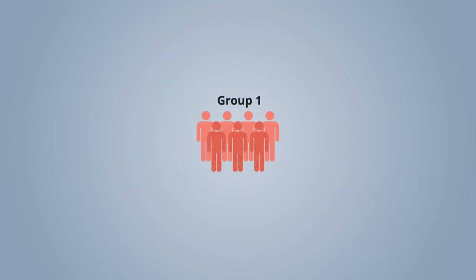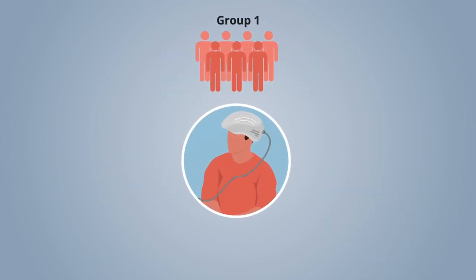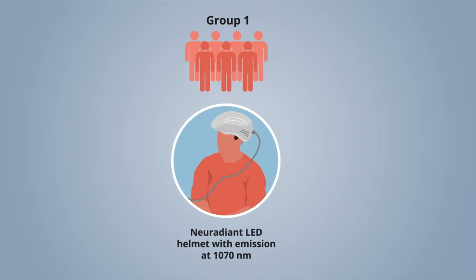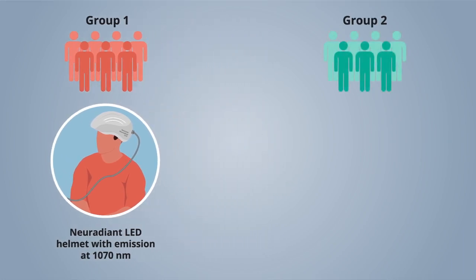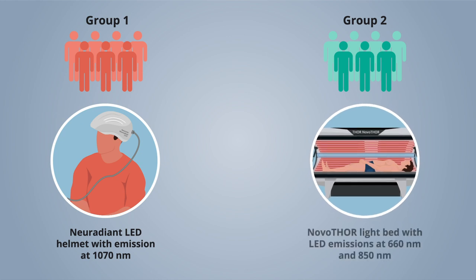Group 1 received TPBM treatments administered using a neuradiant LED helmet emitting light at 1,070 nanometers, while Group 2 received WBPBM with Novothor, a light bed with LEDs emitting lights at 660 nanometers and 850 nanometers.